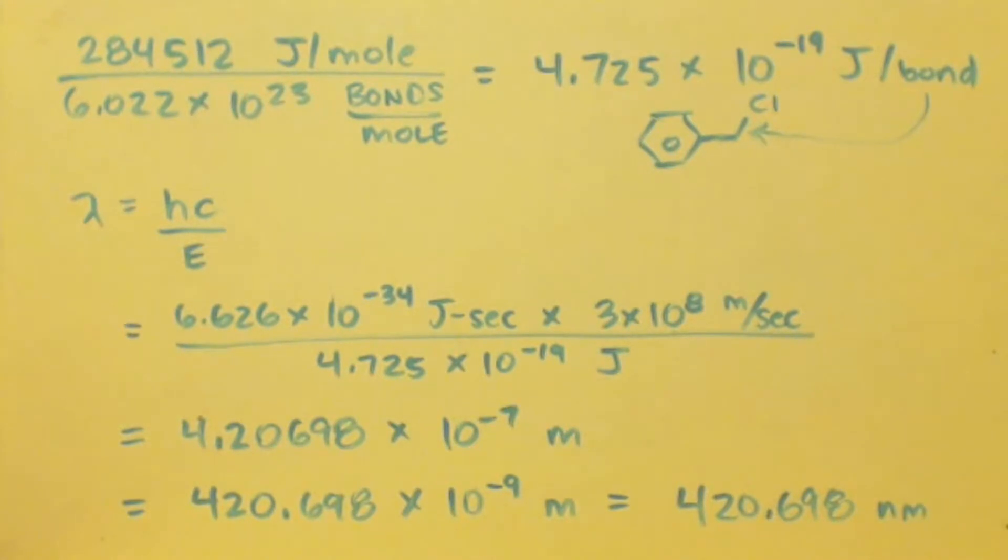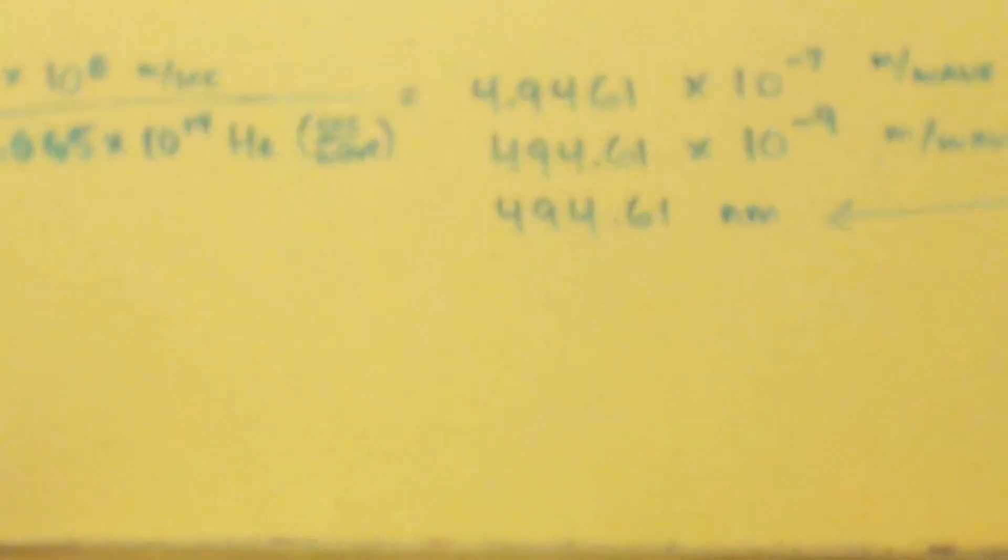That means any light with a shorter wavelength or the same exact wavelength will break this benzoyl carbon-chlorine bond, and that includes 400 nanometers. So we need something with a longer wavelength than 420.698 - at least 421 nanometers. That way it's just slightly less. I'd even go lower than that, but as a range that's the top.